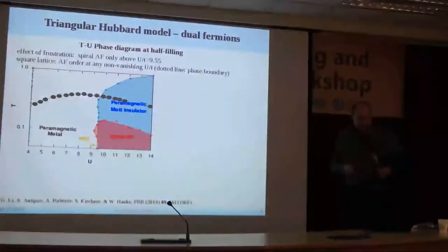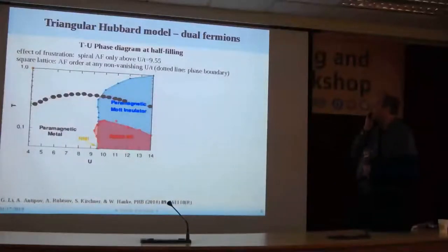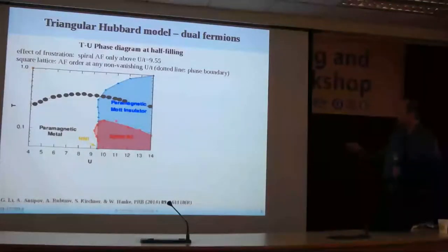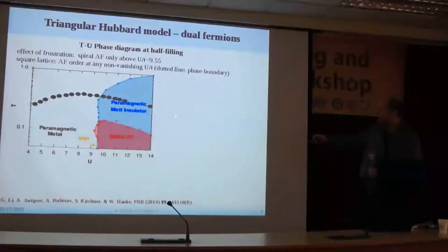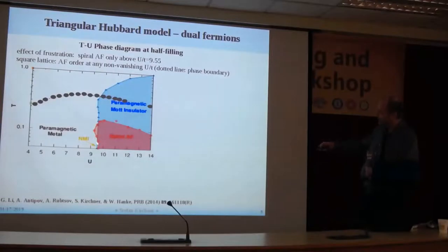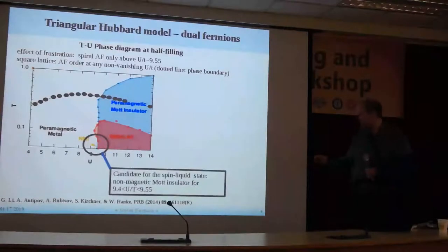So having said that, what happens if one takes the Hubbard model at half-filling and makes this approximation? This is the phase diagram one obtains, published in this paper. The dotted line is the phase boundary for the antiferromagnet on the square lattice. If you go to the triangular lattice, the order is pushed back and you get a spiral antiferromagnet. Here we have a paramagnetic metal. And the thing I would like to draw your attention to: there is a small region which is a candidate for a spin liquid state.